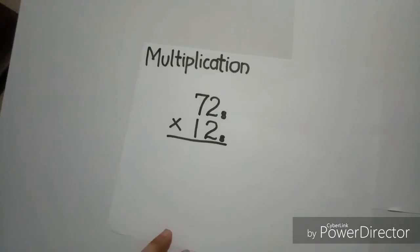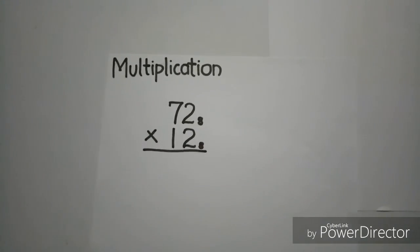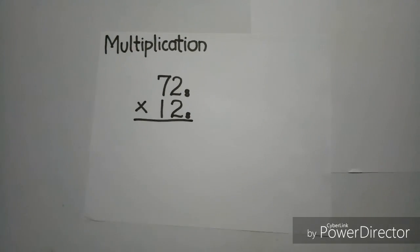Now, for the multiplication, let's have 72 base 8 times 12 base 8.